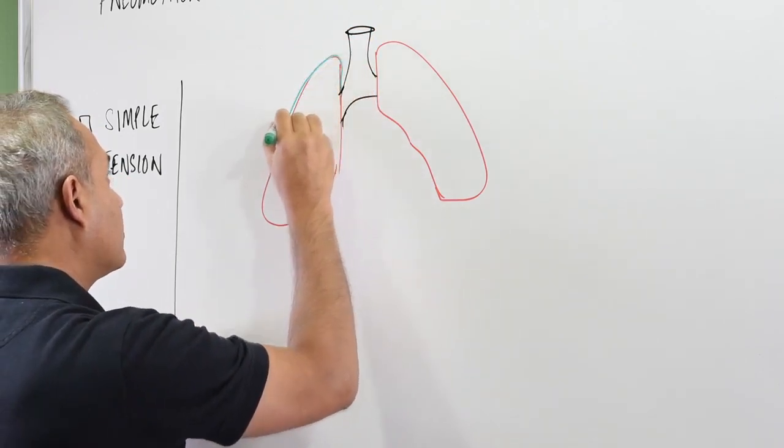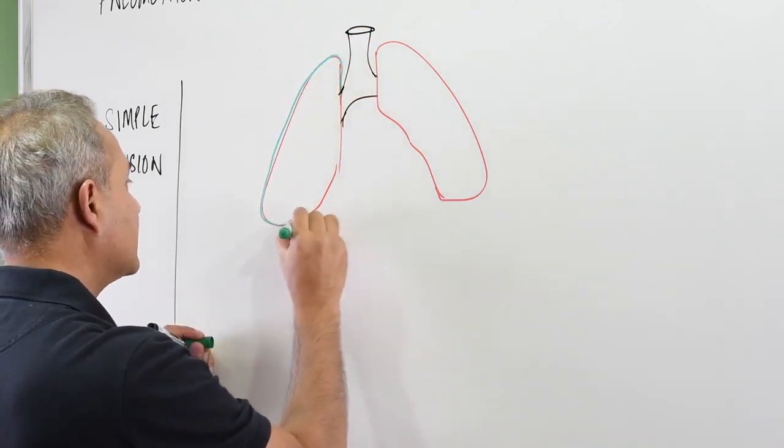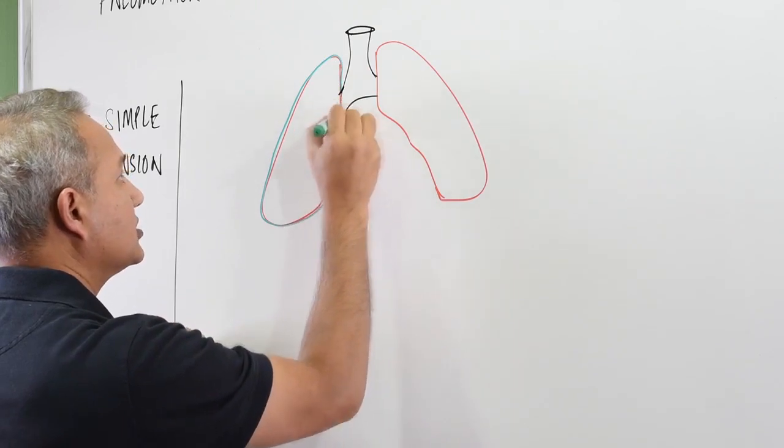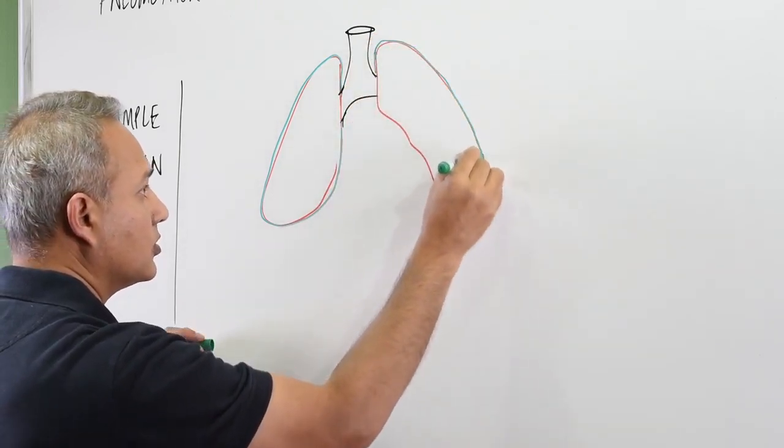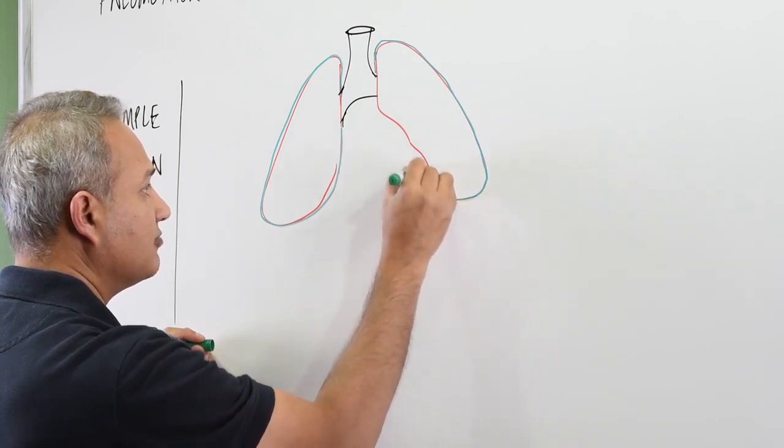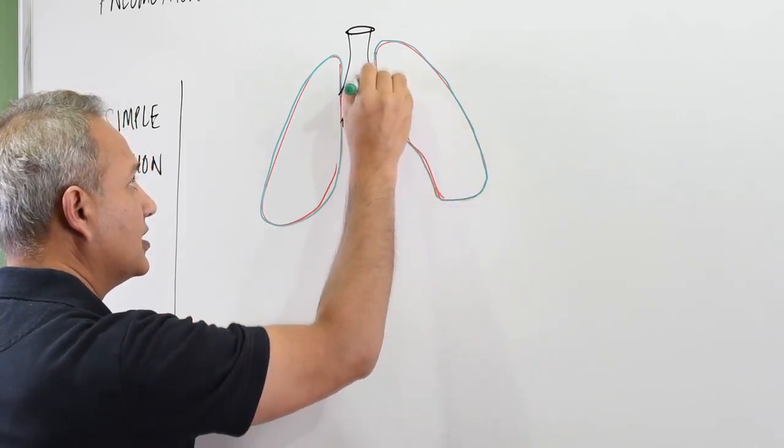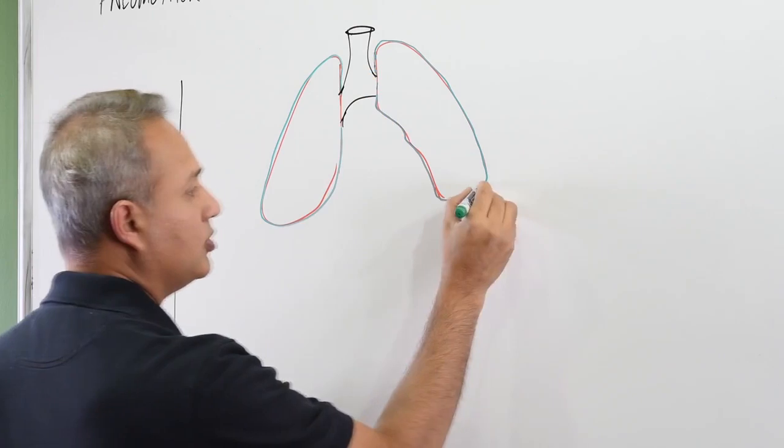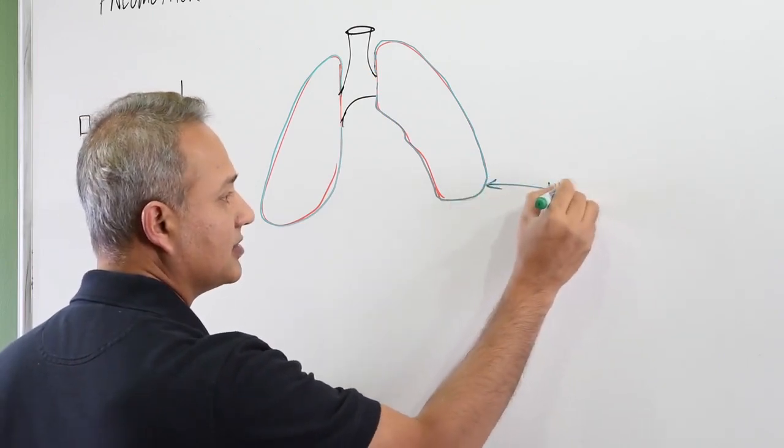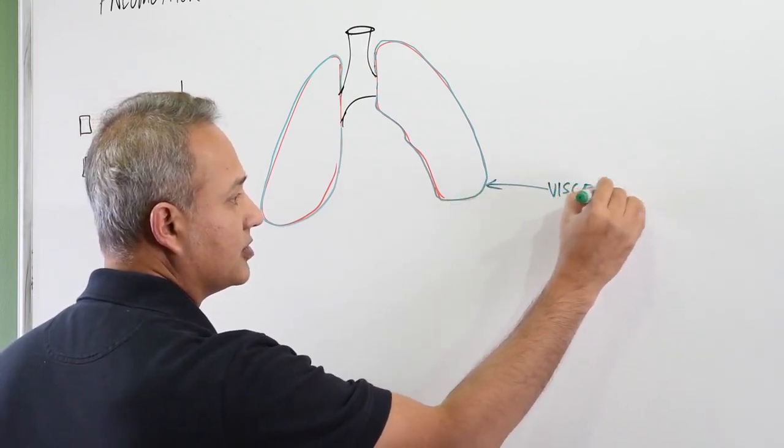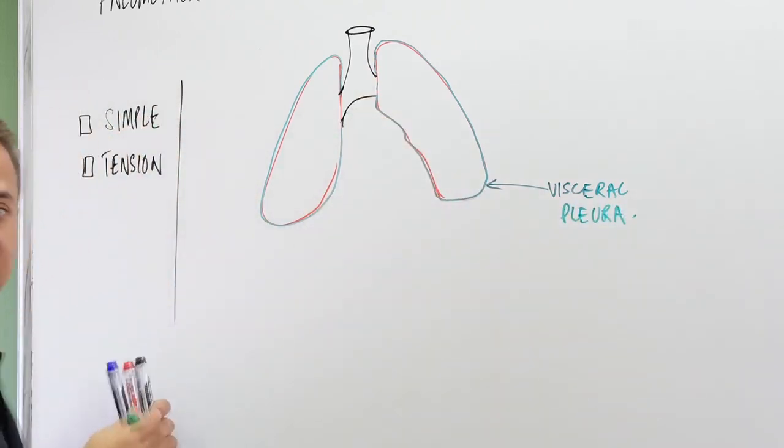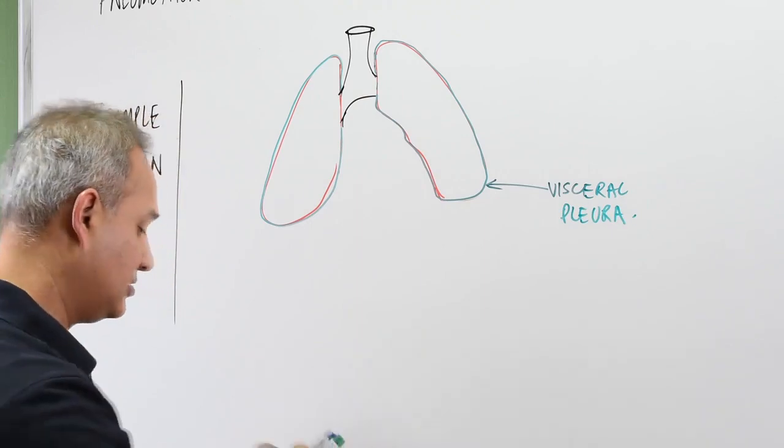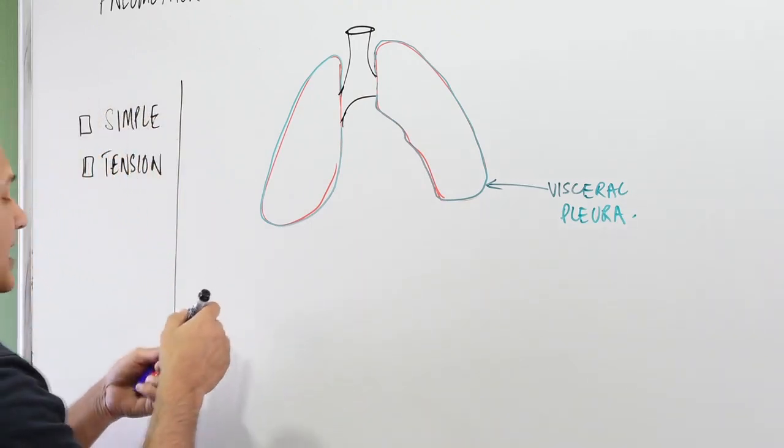We know that the lungs are covered. How do we know that? We just did that in our other lectures. Lungs are covered with two types of pleura. One is the visceral pleura, that is what I am drawing in this green. This visceral pleura is stuck to the lungs, it is almost part of the lungs' external surface.